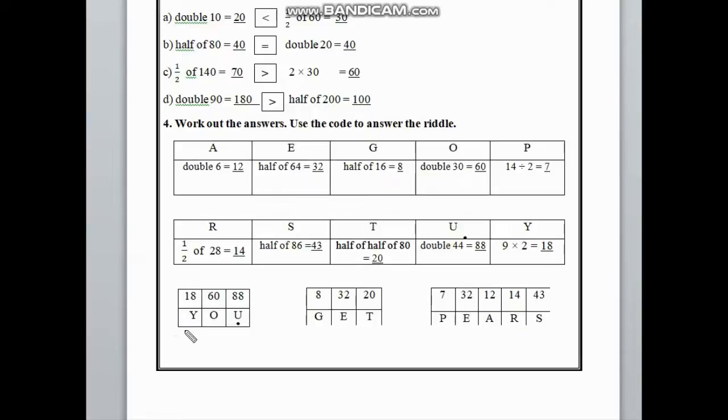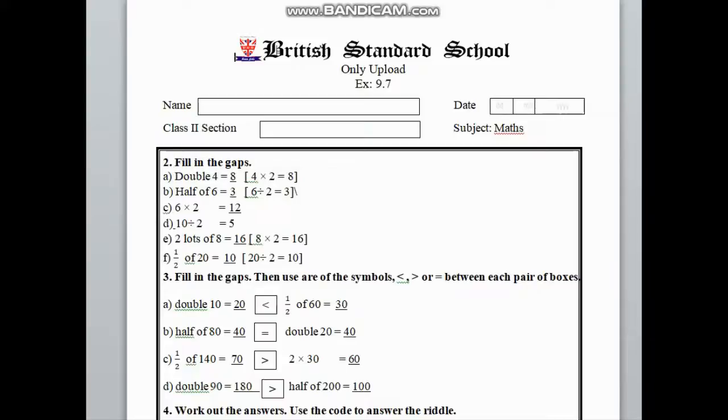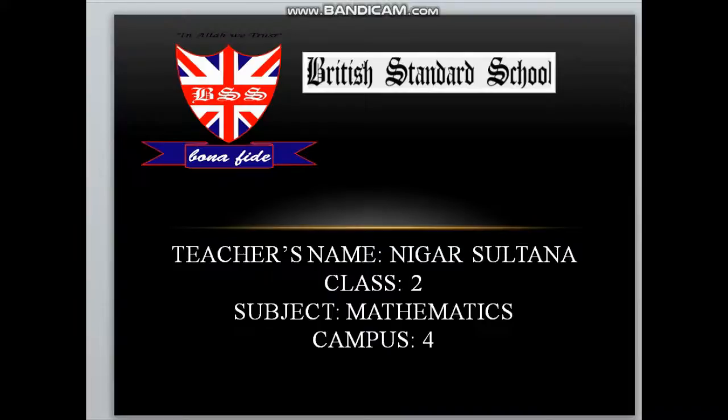And it makes U. In the same way, we have to use the code for the other boxes. Like here we get gate, and here we get pierce. I hope you all understand how to solve exercise 9.7. Take care of yourself. Allah Hafiz.